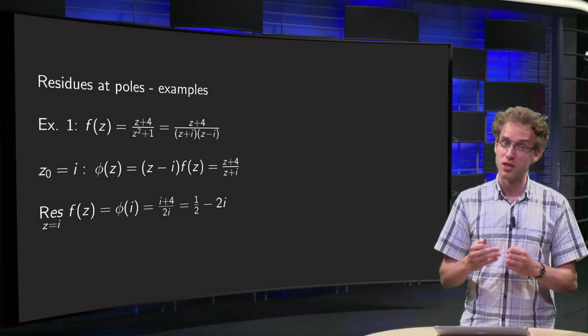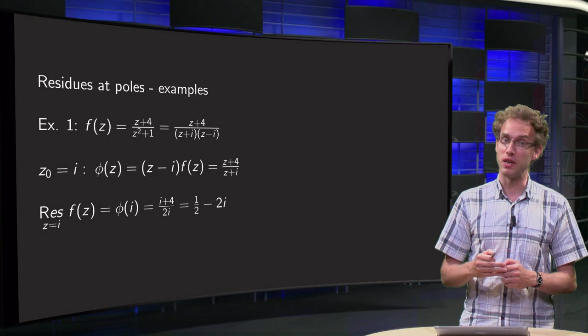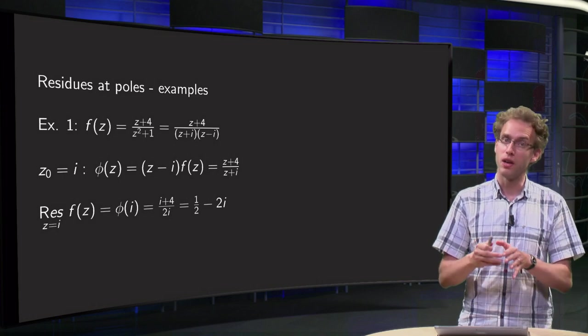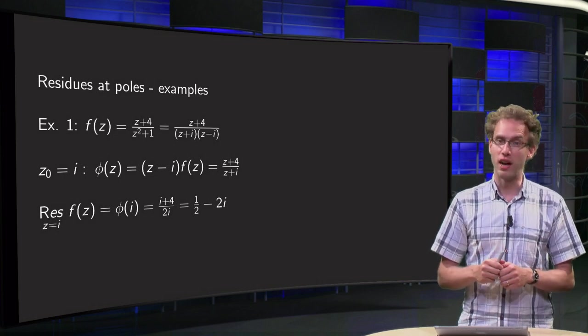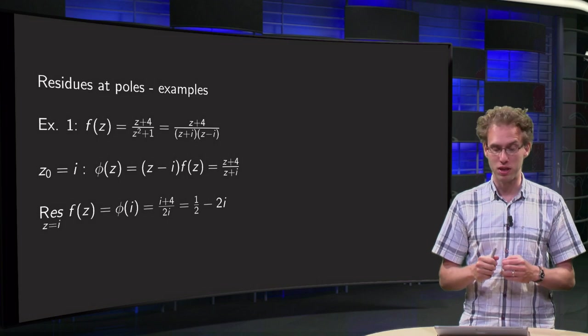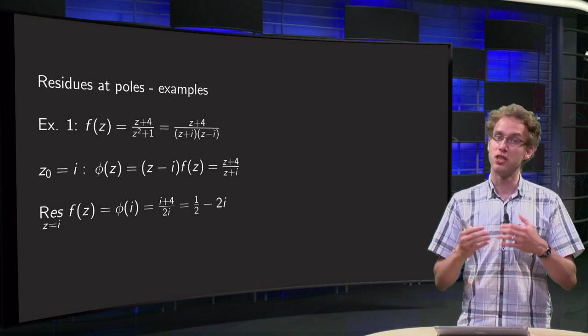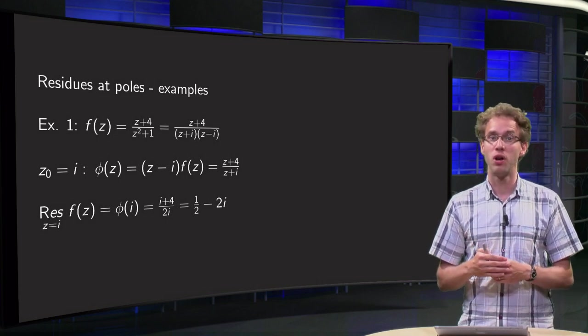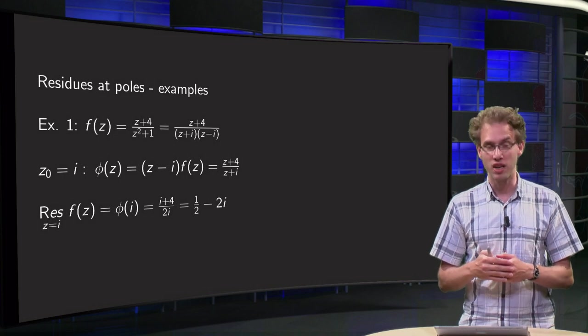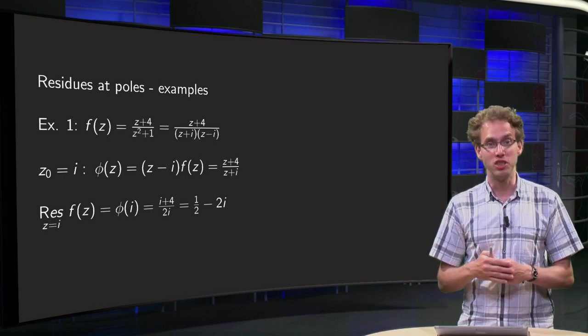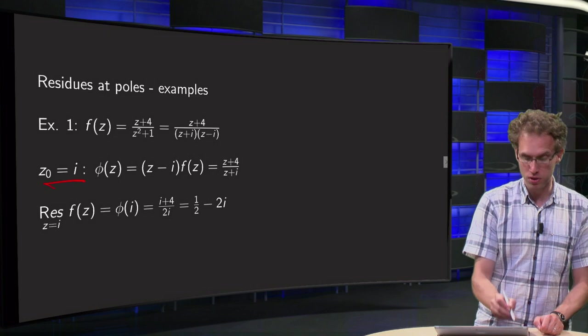We start with f of z equals z plus 4 divided by z squared plus 1. You can rewrite it as z plus 4 divided by z plus i times z minus i. We see that we have poles of order 1 at plus and minus i, and let us compute the residue at z0 equals plus i.